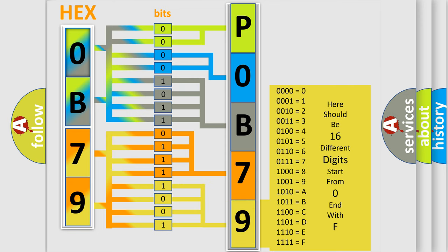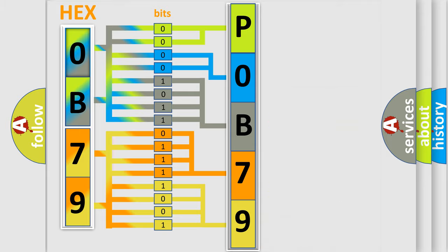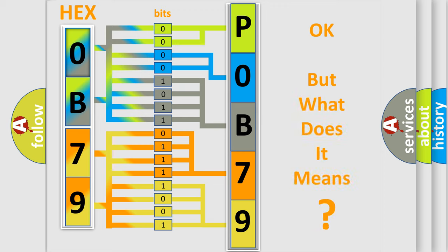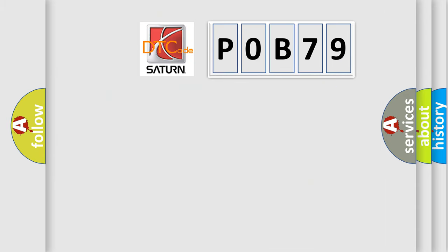We now know in what way the diagnostic tool translates the received information into a more comprehensible format. The number itself does not make sense to us if we cannot assign information about what it actually expresses. So, what does the Diagnostic Trouble Code P0B79 interpret specifically?